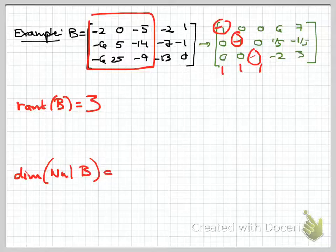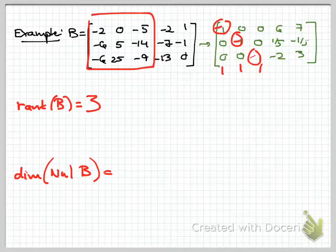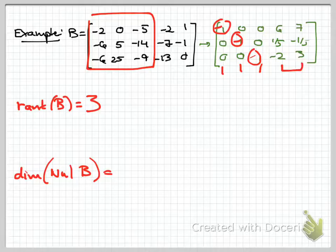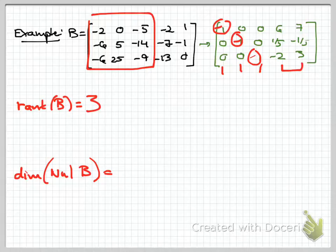For the dimension of the null space, recall that the basis for the null space corresponds to the free variables. Here, x4 and x5 are free. Each free variable contributes one vector to the basis for the null space. So the dimension of the null space of B is 2.